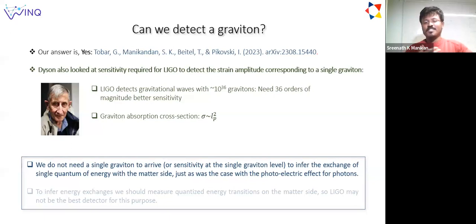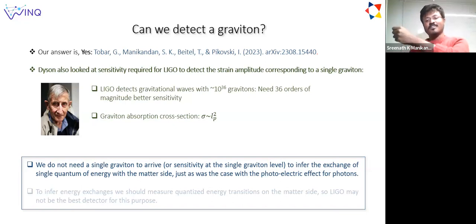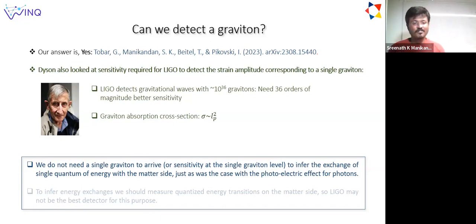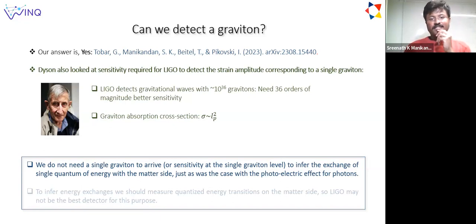Our answer to the question of whether we can detect a graviton is yes. Before going into details, I want to respond to the arguments of Dyson and Weinberg. One thing we learned from the photoelectric effect is that we don't need a single photon to detect or infer the existence of a single photon. You can have a source containing many photons, but provided the frequencies are matching, you can still have single excitation events on the matter side, corresponding to interactions at the level of a single photon. Therefore you can infer a single photon on the field side with energy conservation, and we don't need the kind of sensitivity Dyson predicted.